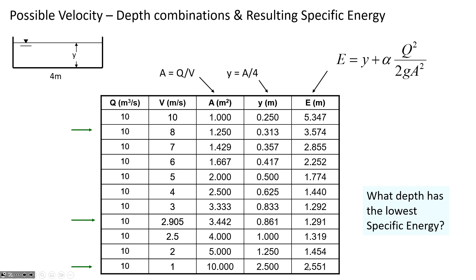At the bottom row - a slow velocity of 1 m/s - the total specific energy is 2.551 meters, of which 2.5 meters is depth and only 0.051 meters is velocity head. So there's a transition: at one extreme you have a lot of velocity head and very little depth, and at the other extreme you have lots of depth but very little energy in the velocity head term.